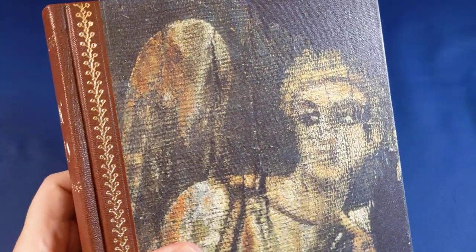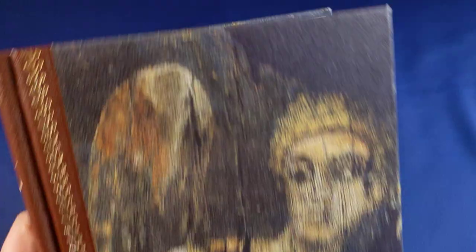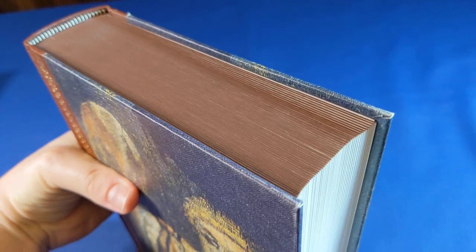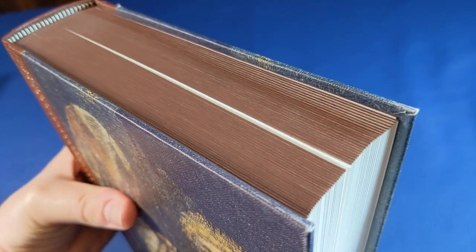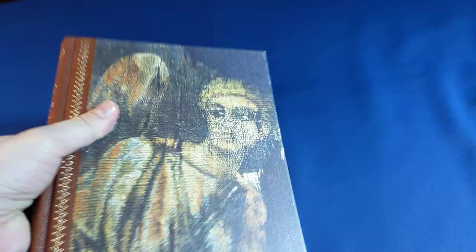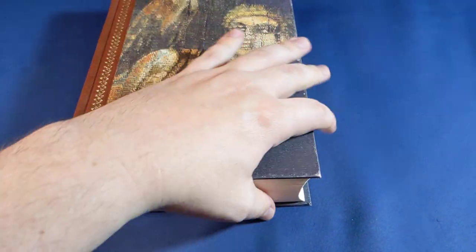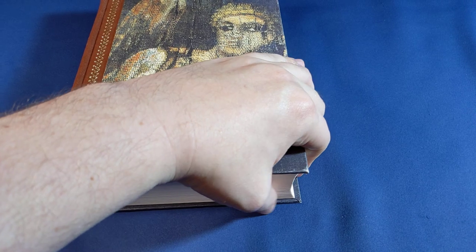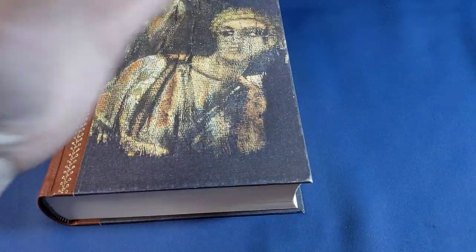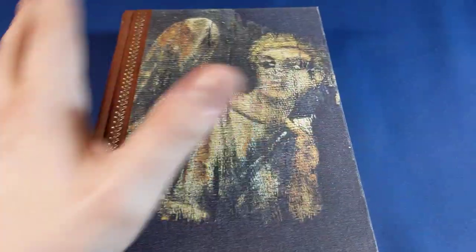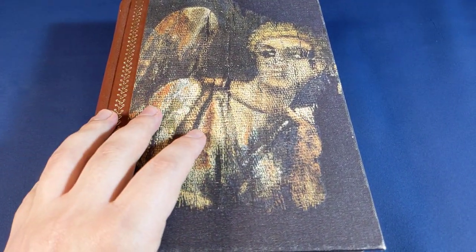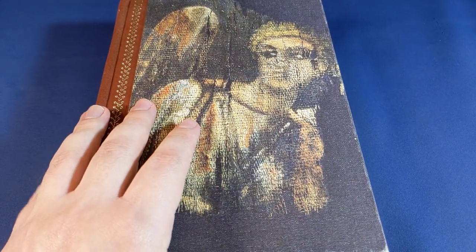This edition by the Folio Society seems to be the nicest one out there. I did a little bit of research and also found one by Eastern Press, which looked very pretty on the outside. However, I was unfortunately assured by people more familiar with Eastern Press that the insides of their books are often just the paperbacks with pretty covers added on to them.